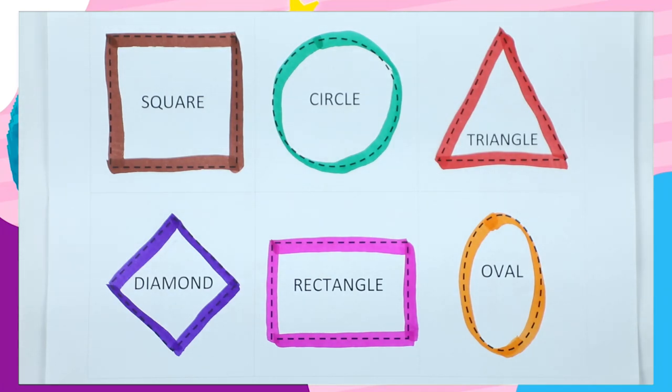Friends, today we learn shapes with colors. We recognize square, circle, triangle, diamond, rectangle, and oval with colors.